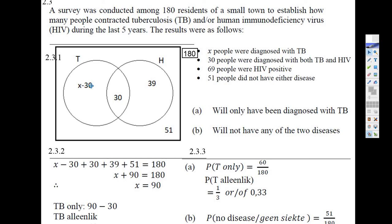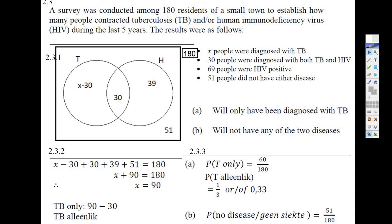TB only is 90 minus 30, so it must be 60 people that have TB only — the part that's only tuberculosis. So 60 over the total number of people, that's desired outcomes over total outcomes — that's one third. How many people have no disease? Well, 51 have no disease, so 51 out of 180. And that's your answer. Not so bad. That's the end of the probability ones.